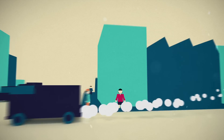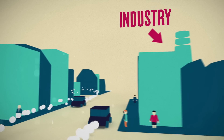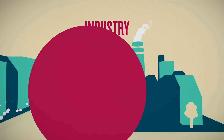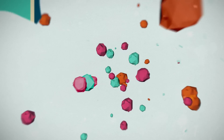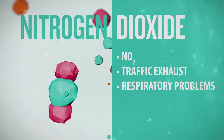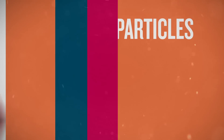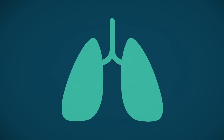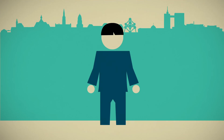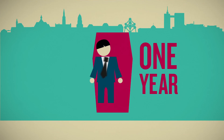Our cities are steadily growing and getting more crowded with people, traffic and industry, and they all leave their mark. The air in our cities contains all kinds of unhealthy pollutants like nitrogen dioxide, ozone and fine dust particles. Obviously we don't want those things ending up in our bodies. Did you know that people in cities could lose one year of their life due to exposure to these pollutants?